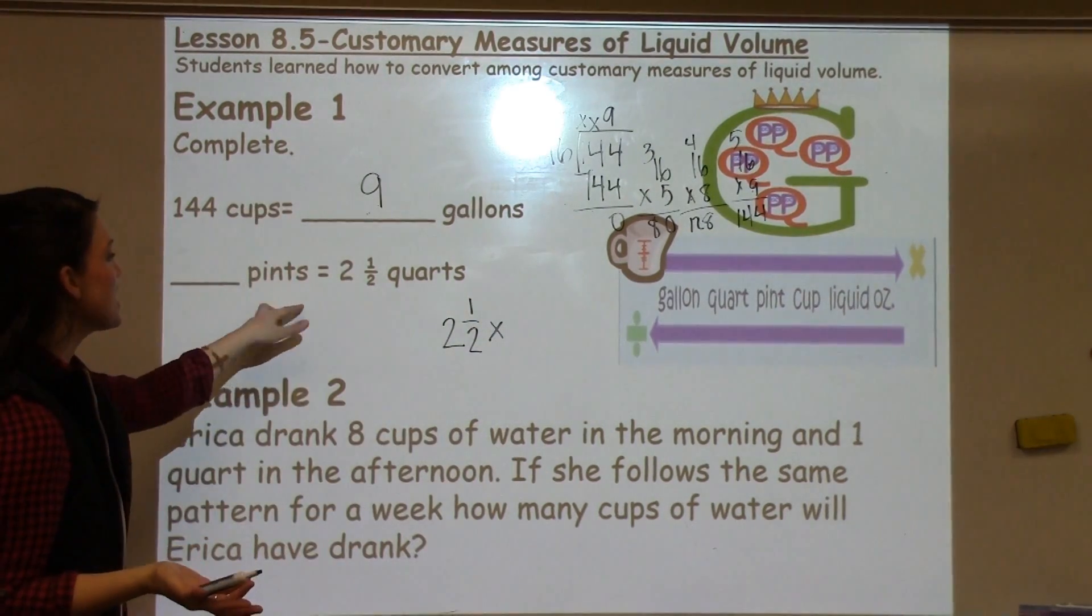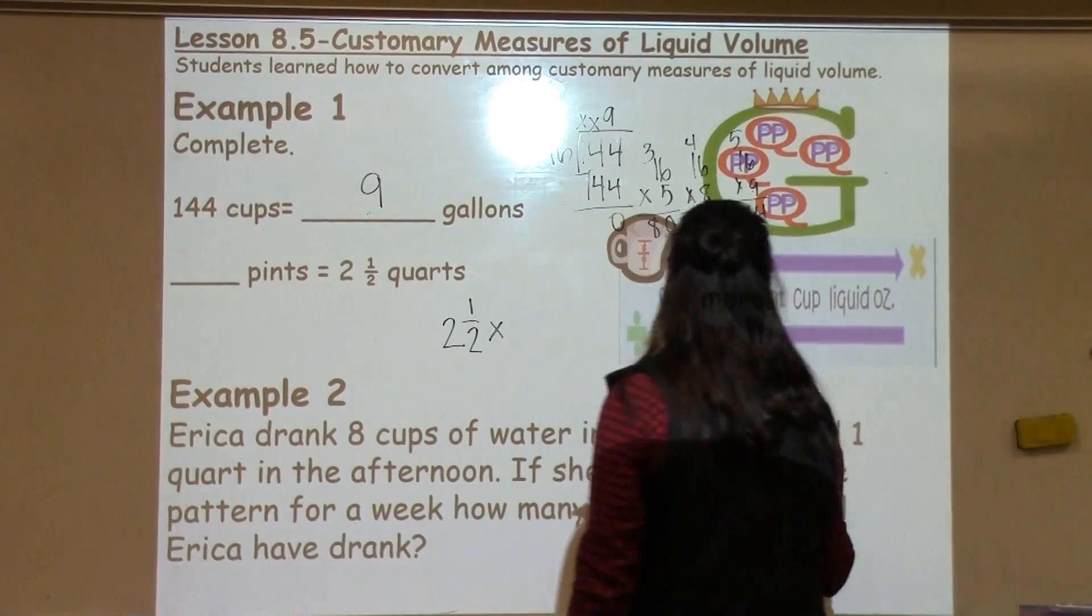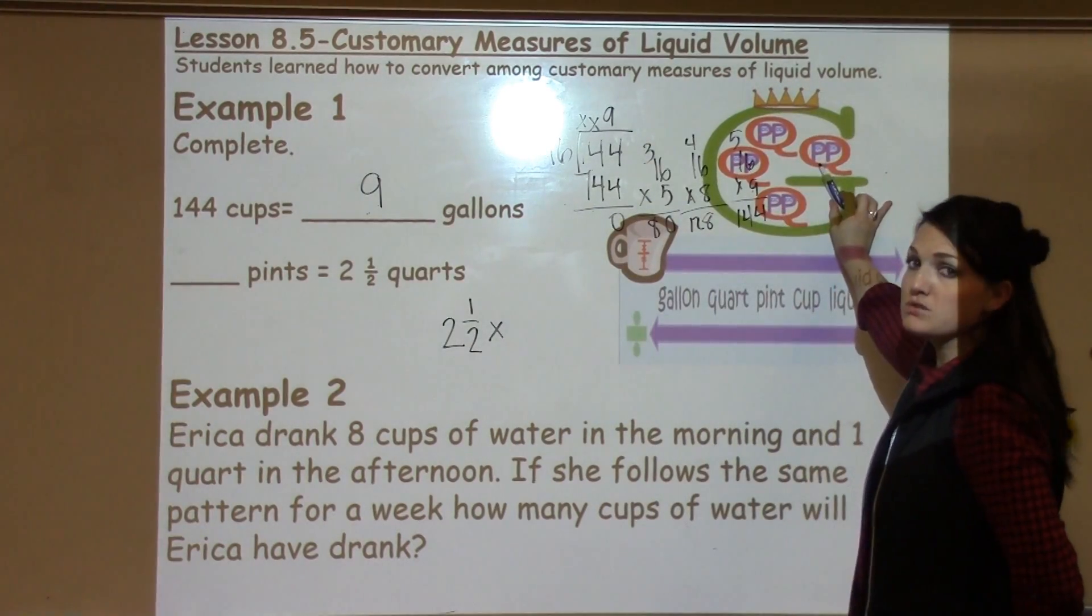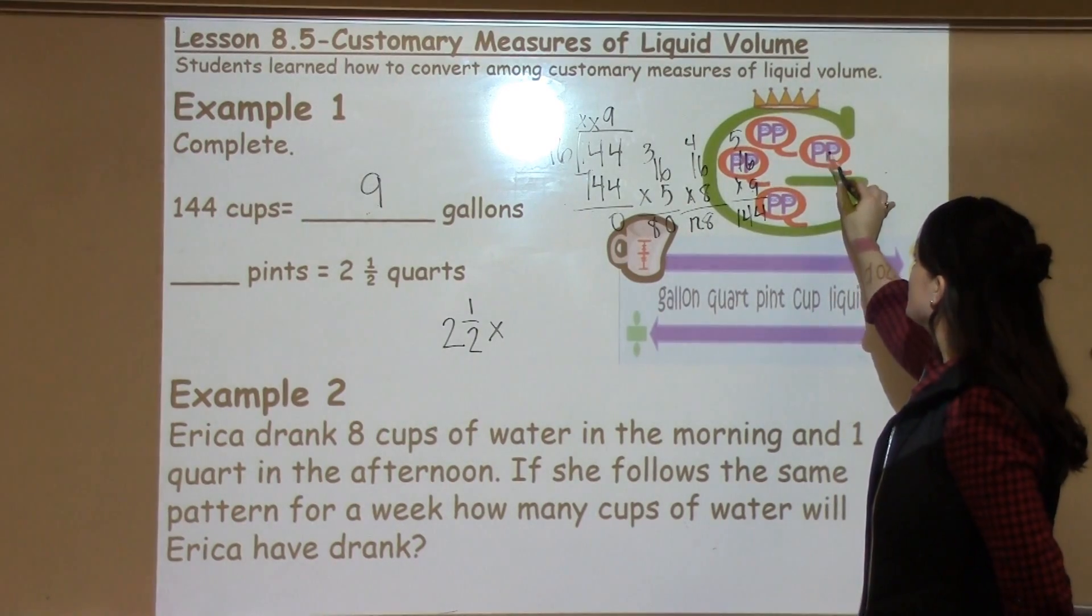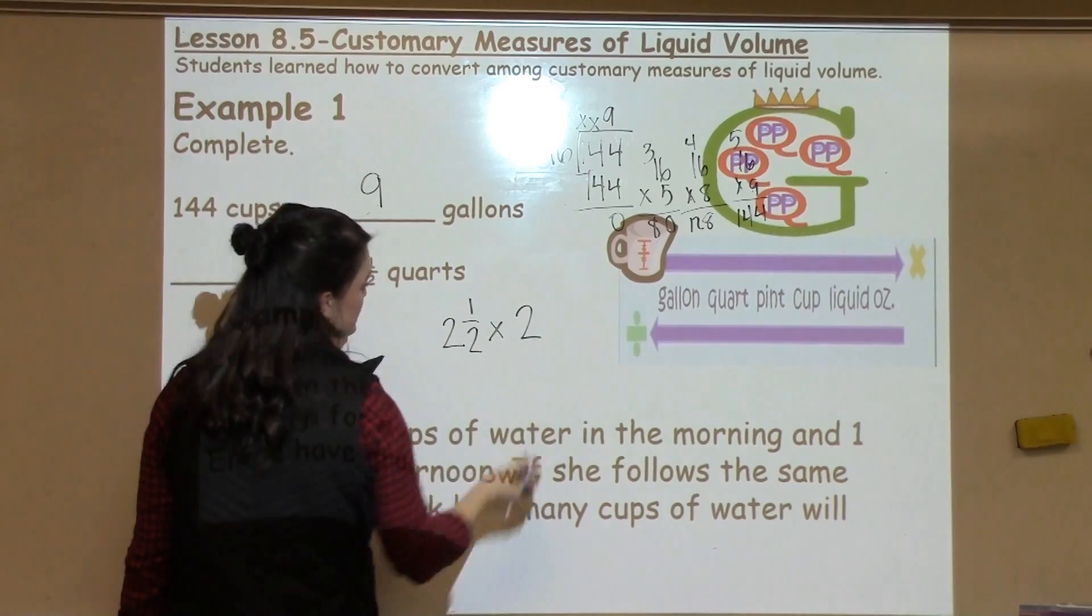The next thing I need to do is figure out what is the basic connection between pints and quarts. So, I go to my big G. How many pints are in just one quart? Well, I see two p's inside one q, so that helps me know I need to go ahead and multiply by 2.